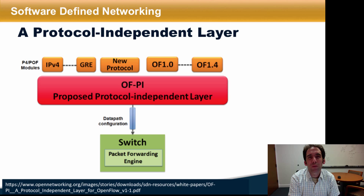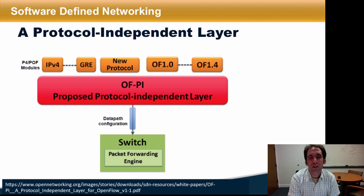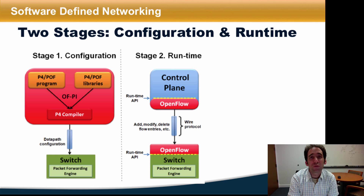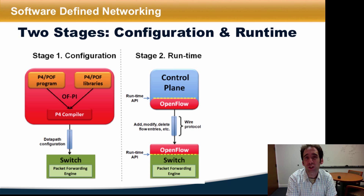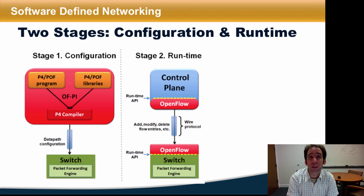One important development in programmable hardware was the definition of a protocol-independent layer that allows a switch's packet processing pipeline to be defined in terms of a protocol-independent format that is then used to configure the data path. This effectively decouples switch operation into two stages. Up to this point in the course, we've really been talking about what's shown as stage 2 here, or the runtime, whereby you write a control plane program that configures the data path using a protocol like OpenFlow.